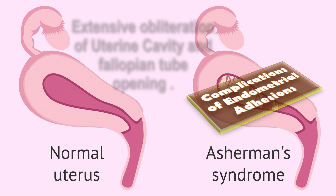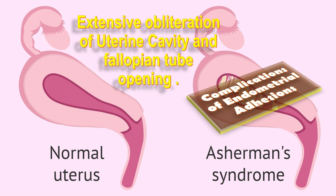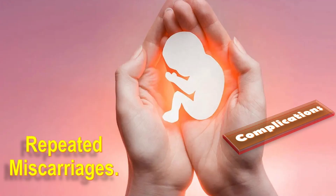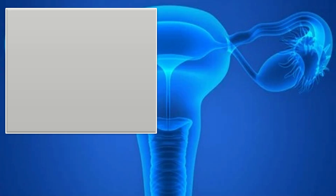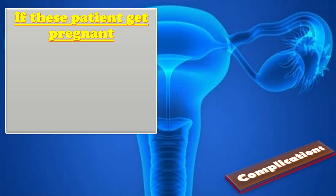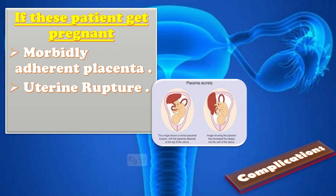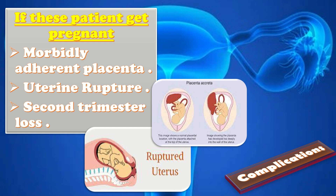The possible complications of endometrial adhesions, if left untreated, include extensive obliteration of the uterine cavity and fallopian tube openings, resulting in problems with menstruation and infertility. Other complications include endometriosis and hematoma formation, as well as repeated miscarriages. If patients with uterine adhesions become pregnant, there are risks of morbidly adherent placenta such as placenta accreta, uterine rupture, second trimester loss due to cervical insufficiency, or premature delivery.